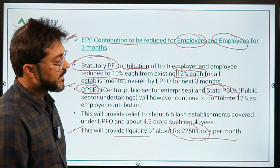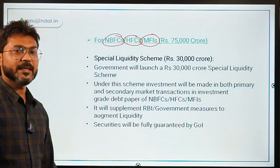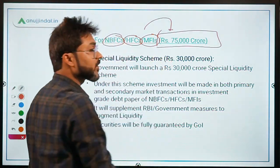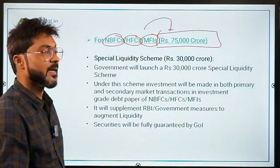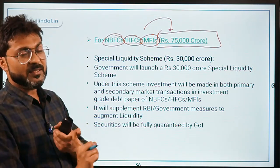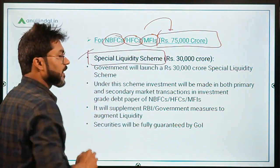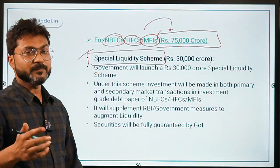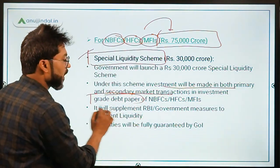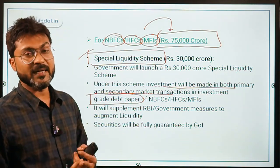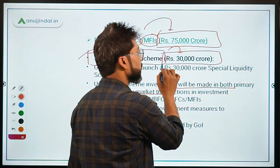For NBFCs, Housing Finance Companies, and Micro Finance Institutions, ₹75,000 crore was provided through two schemes. The first is the Special Liquidity Scheme worth ₹30,000 crore, under which investments will be made in both primary and secondary market transactions in investment-grade debt papers issued by NBFCs, HFCs, and MFIs.